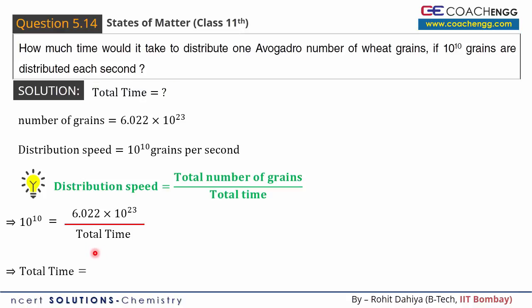The total time equals 6.022 × 10^23 divided by 10^10, which equals 6.022 × 10^13 seconds.